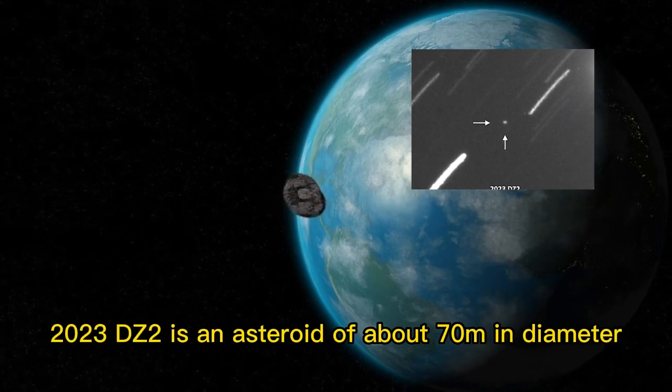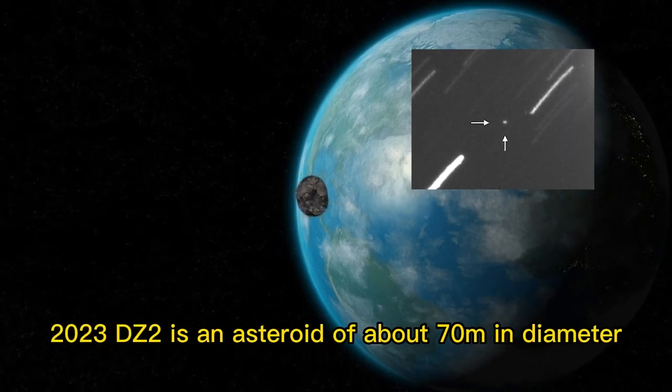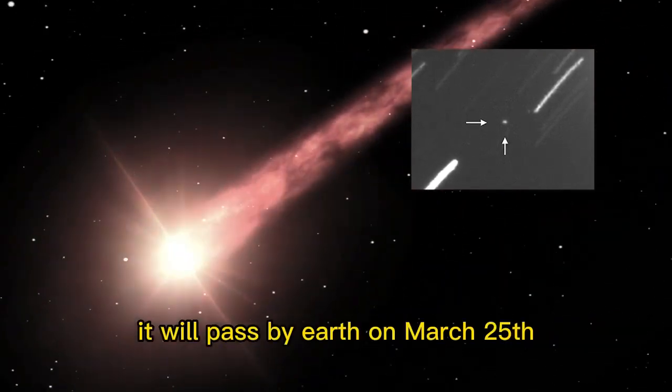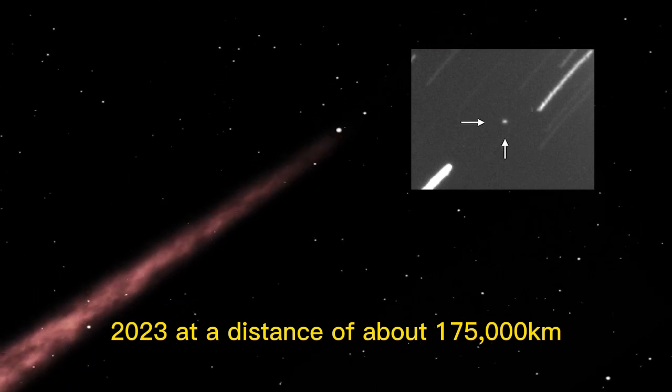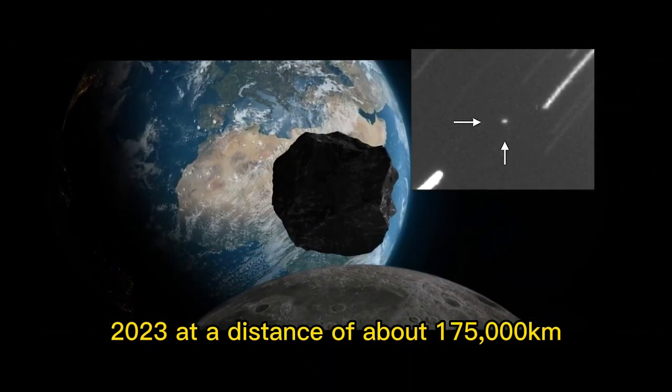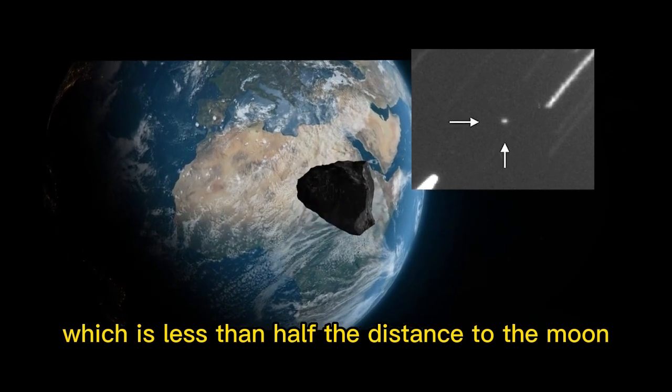2023 DZ2 is an asteroid of about 70 meters in diameter and belongs to the Apollo group of near-Earth objects. It will pass by Earth on March 25, 2023, at a distance of about 175,000 kilometers, which is less than half the distance to the moon.